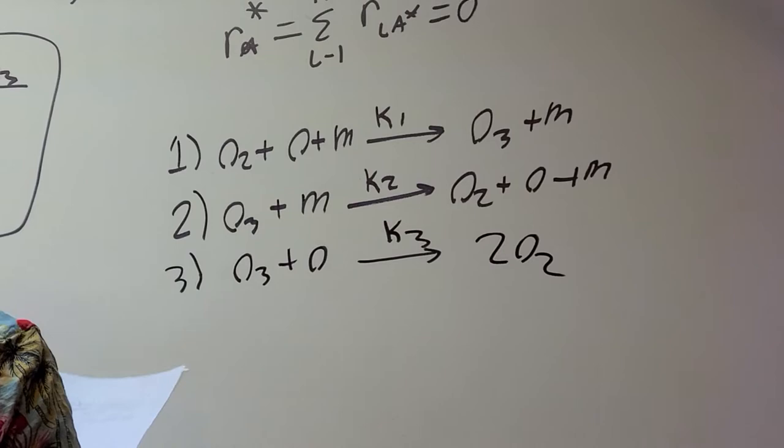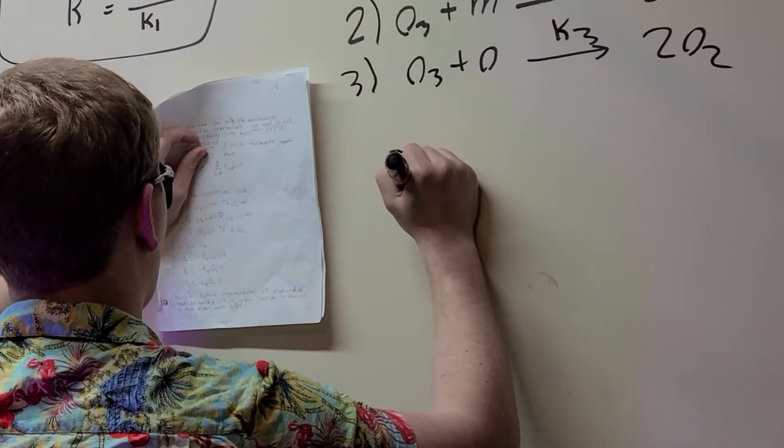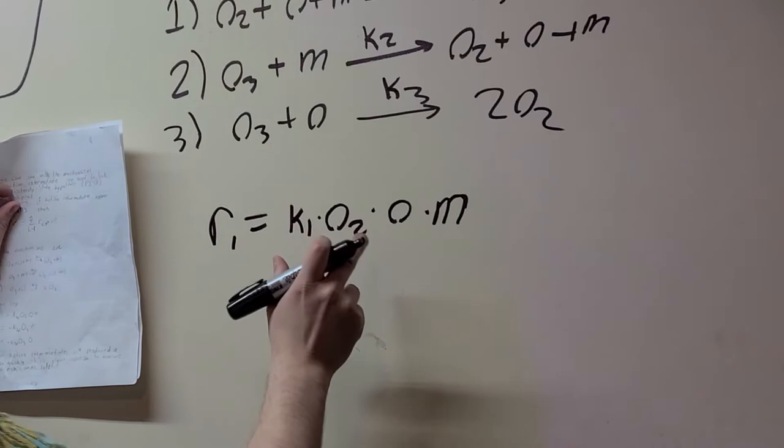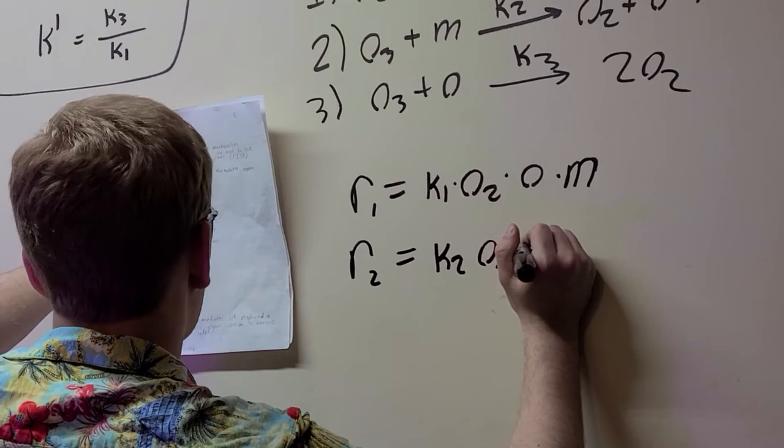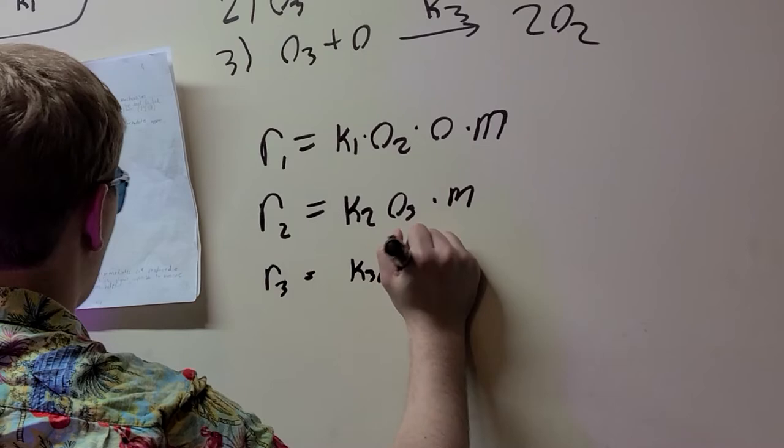And then we can rewrite these, although very similarly, replacing R1 is equal to K1 O2 O M using the K and then the reactants. So R2 is equal to K2 O3 times M. And finally, R3 is equal to K3 of O3 O.